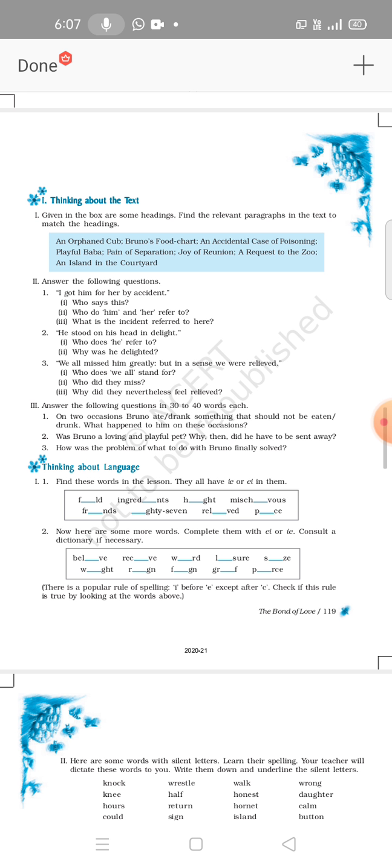Question two: He stood on his head in delight. Who does he refer to? He refers to baby bear. Second: Why was he delighted? To see the author's wife after a long time. Yes, he was delighted because he saw the author's wife after a long time.